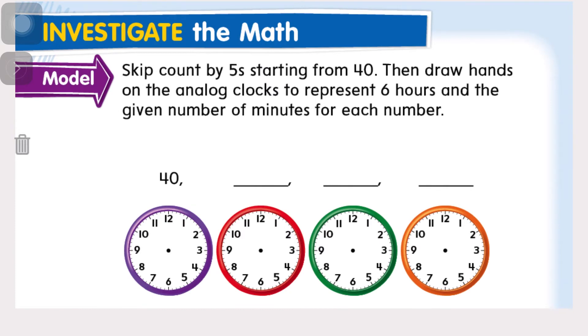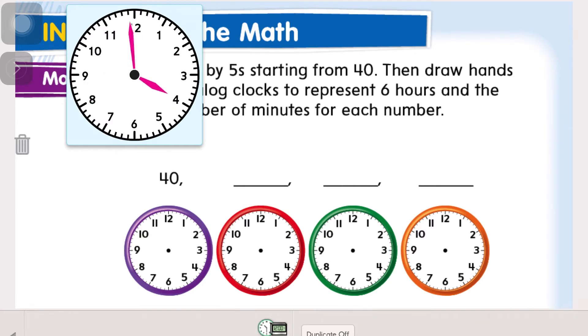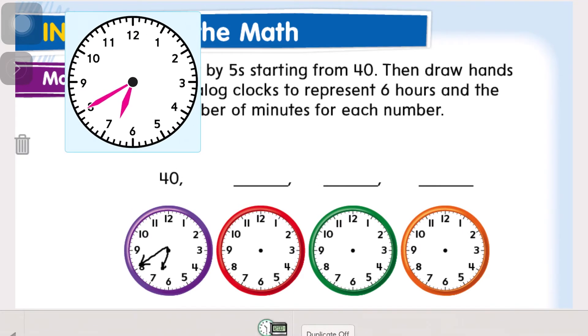We're going to skip count by five starting from 40 and then draw hands on the analog clocks to represent six hours and the given number of minutes for each clock. I'm going to pull up a clock and make six o'clock. The first one is 6:40. So 5, 10, 15, 20, 25, 30, 35, 40. So I'm going to draw that in. Notice my hour hand is almost to the seven because we're getting pretty close. And my minute hand goes on the eight.